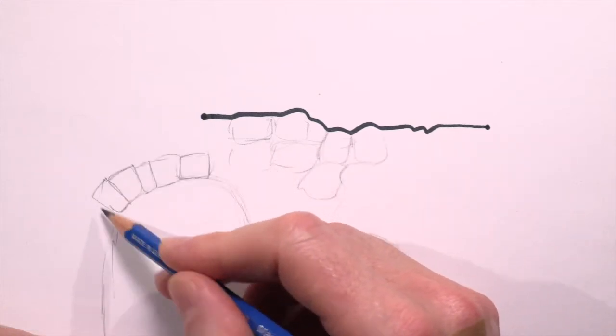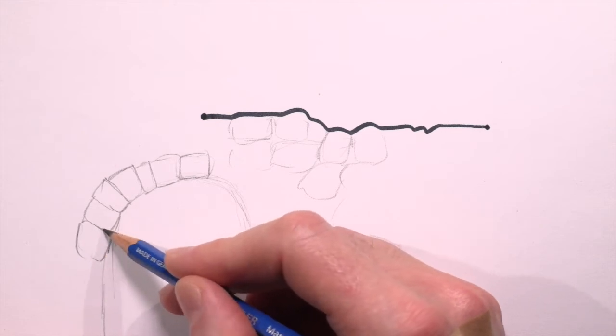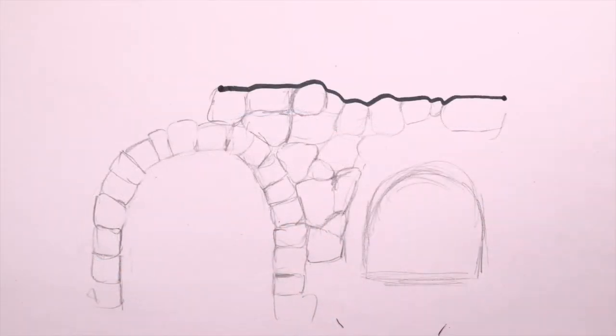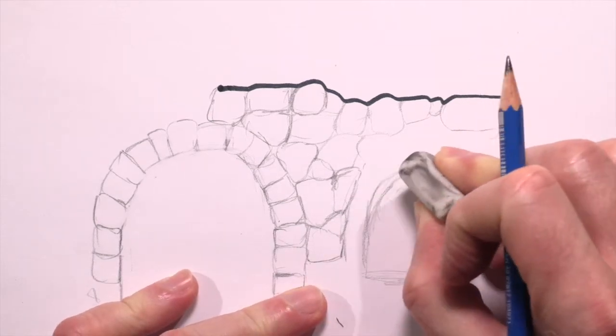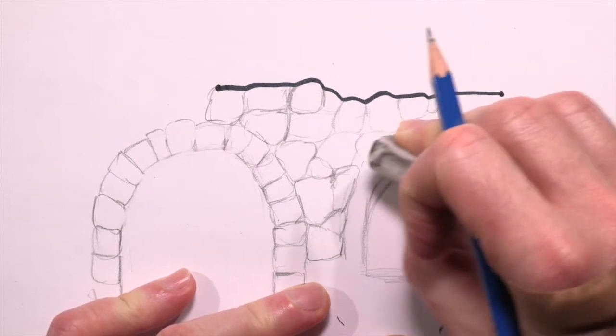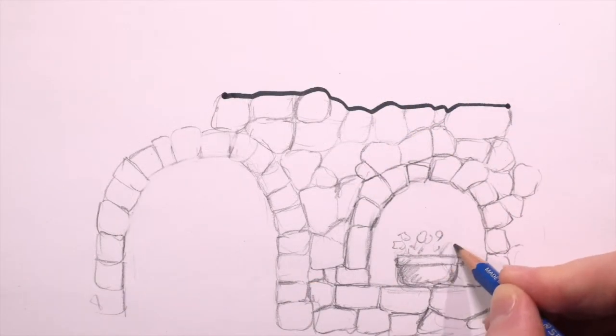It could have an arched doorway. And a window, too. Maybe a flower pot on the window ledge.